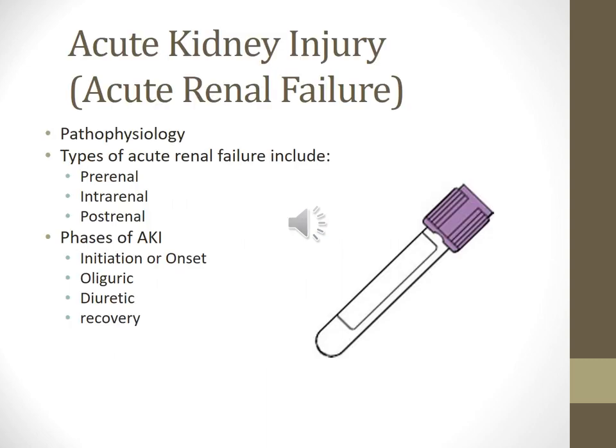Acute kidney injury, also called acute renal failure. The pathophysiology is a sudden and almost complete loss of kidney function over a period of hours to days. This can be reversible if found and treated early. Signs and symptoms include oliguria, anuria, or it could have a normal volume of urine, plus elevated BUN and creatinine with retention of other metabolic waste products, called azotemia.